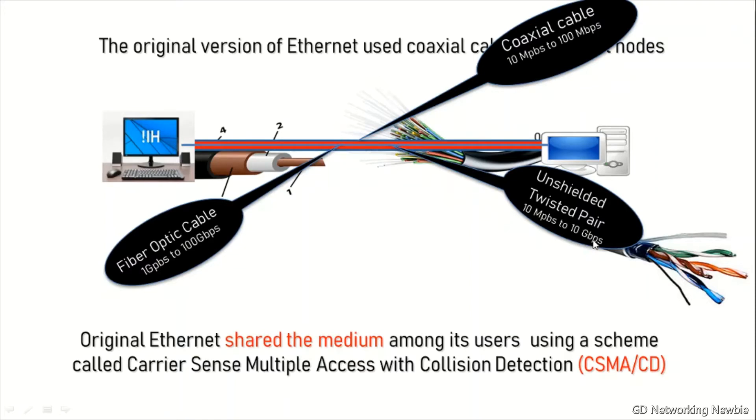Original Ethernet shared this common medium by using a scheme called Carrier Sense Multiple Access with Collision Detection - CSMA/CD.